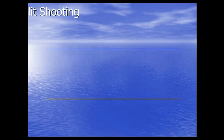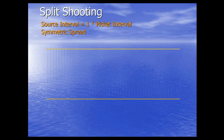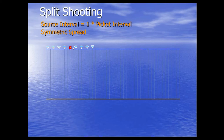For seismic data acquisition, for simplicity we are considering an 8-channel record which is a land survey. The source interval is 1 into picket interval and we will be using a symmetric spread, where you have a similar number of receivers on both sides of the source. The source is placed in the middle of the receivers — four receivers on the left side and four on the right side. Once we fire this shot, the wave propagates and reflects back. The reflection point is called the CMP, or common midpoint.